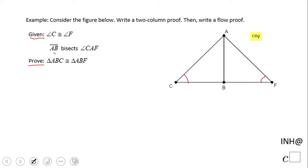When you hear that bisection, you know it cuts an angle in half. So that's the reason those angles are congruent, because the big angle CAF was cut in half.